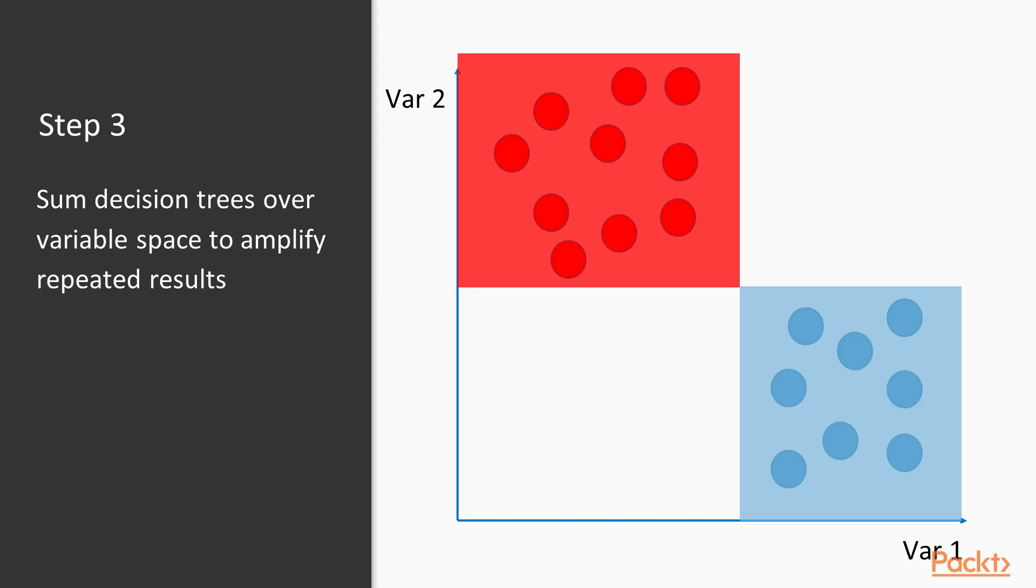Now, in the next step we see the true value of this, because when we sum those three decision trees, we see in this case they cancel to 0. In this case we get blue reinforcing twice, and in this case we get red reinforcing twice. So we've ended up with a system which works very well for this entire example.